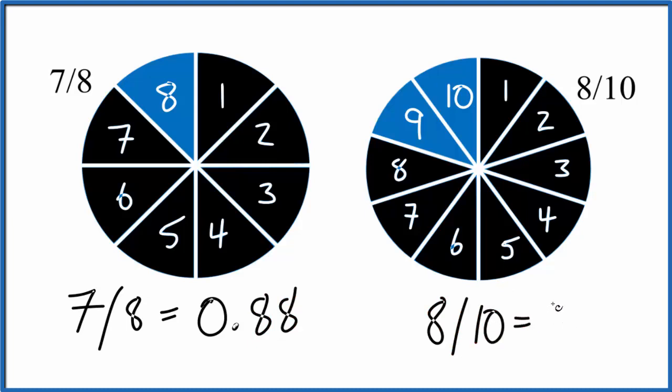Over here, 8 divided by 10 equals 0.80. So we can see that 7/8 is bigger than 8/10 because 0.88 is bigger than 0.80. Either way, 7/8 is larger than 8/10.